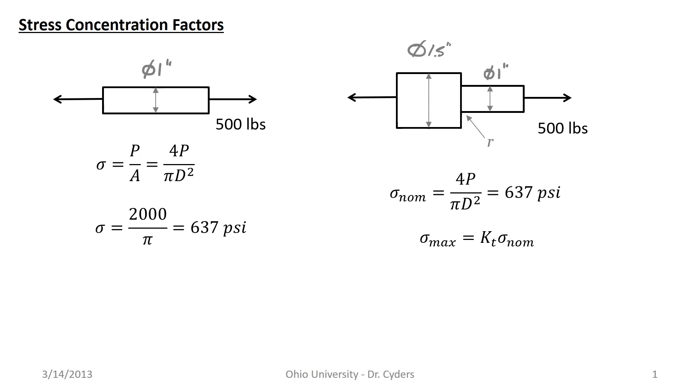These are often tabulated for different geometries. Generally what we're going to do as designers is try to find a geometry that's very similar to what we're designing and use a KT value that we can quickly look up. Usually this is a function of how sharp this fillet is in relation to the size of the part, the R over D ratio, and also the D over D ratio - how abrupt is the change in geometry from this part to this part.